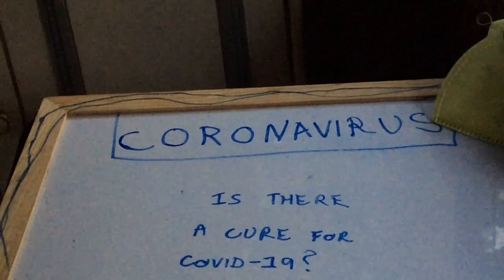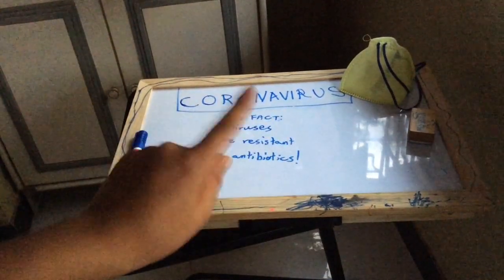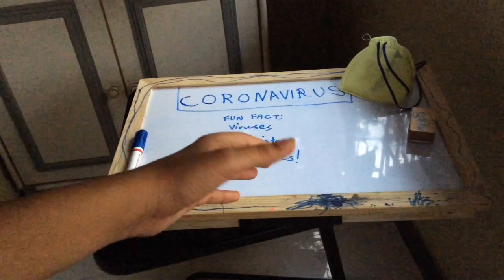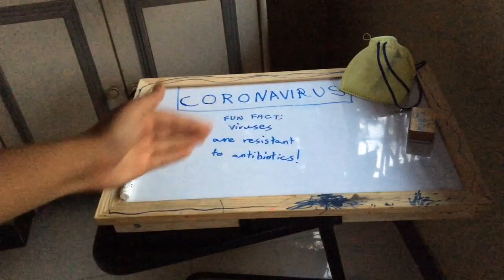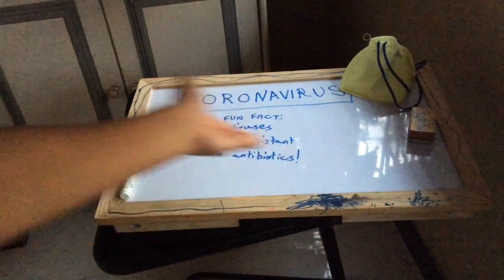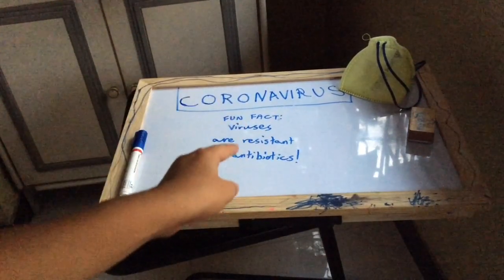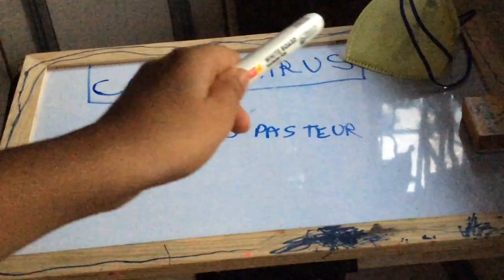Now, is there a cure for COVID-19? Please rejoice — you're wrong. Fun fact: viruses are resistant to antibiotics. Does this mean you cannot have a vaccine for COVID-19? Not at all. How vaccines work is basically: the vaccines make your immune cells very strong, and your immune cells are the ones which fight off the virus — not the vaccine itself. So you cannot say there's a cure for coronavirus, because viruses are resistant to antibiotics.